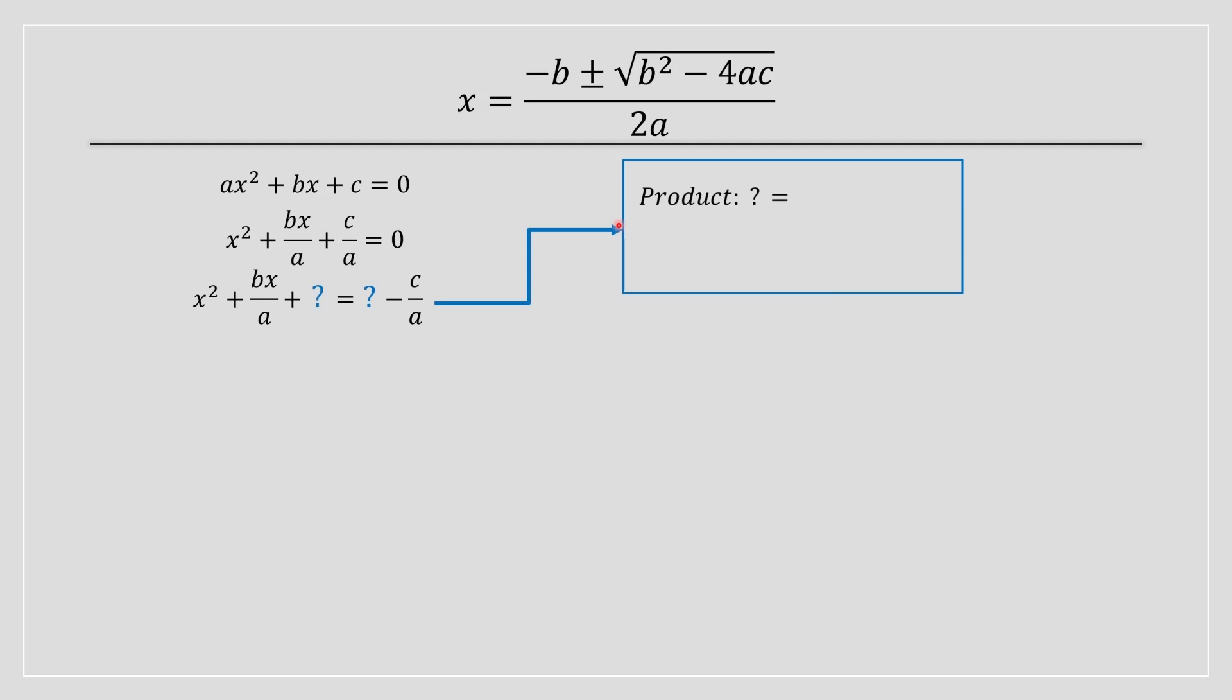How to find the term is through the product sum method. b divided by a is our sum, the coefficient in front of the x term, which is b divided by a.